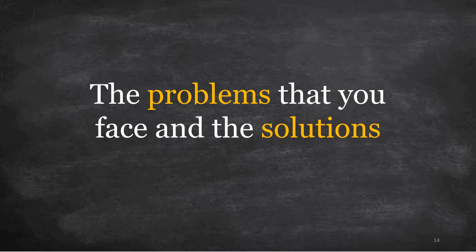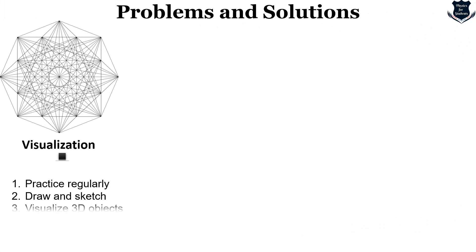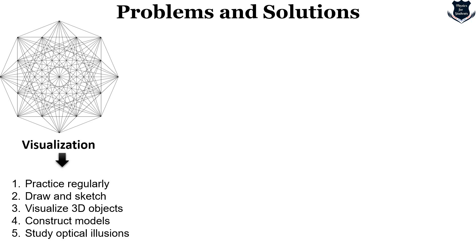Now, what are the problems you might face when understanding geometry, and what are the possible solutions? The first is visualization. Practice regularly: draw and sketch any geometrical figure that comes across. Try to visualize three-dimensional objects. Construct different kinds of models through pen and paper, sketches, etc. Also study optical illusions — for example, M.C. Escher's waterfall and others. The more you study illusions, the more your eyes and brain get strained, and you can see something that normal people cannot see. Construct models, practice, draw and sketch.